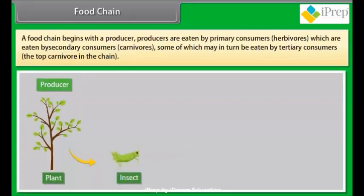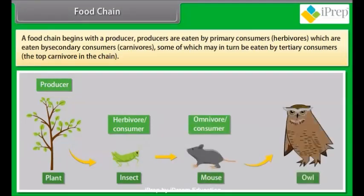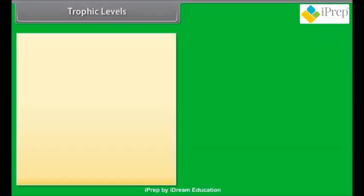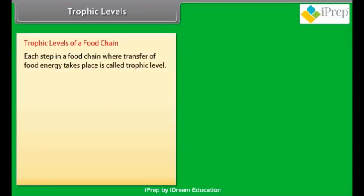A food chain begins with a producer. Producers are eaten by primary consumers — herbivores — which are eaten by secondary consumers — carnivores — some of which may in turn be eaten by tertiary consumers — the top carnivores in the chain.